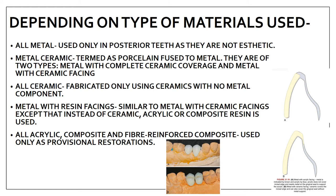The next is depending on the type of material used to fabricate this FPD. It can be all-metal, metal-ceramic, all-ceramic, metal with resin facing, all-acrylic composite, or fiber-reinforced composite. All-metal, as the name says, is made up of metal only and is used only in posterior teeth as they are not aesthetic. Metal-ceramic, termed as porcelain fused to metal, is of two types: metal with complete ceramic coverage and metal with ceramic facing.